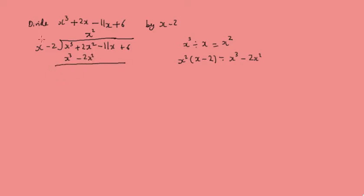Then as we do in long division, we subtract. The x³ cancels, and 2x² minus minus 2x² becomes plus 4x². The remaining terms fall down. Now we take 4x² and again divide it by x, which gives us 4x, so we put plus 4x in the quotient.